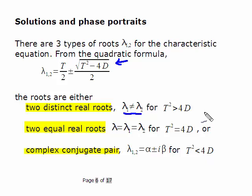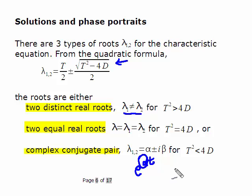This parallels exactly what we had for the harmonic oscillator case, except there we always had attenuation — an e^(alpha t) factor that was negative, giving a damped sinusoidal wave. Here in the general case we're not restricted to that, so this is a more general case than the harmonic oscillator, though with similar solutions.